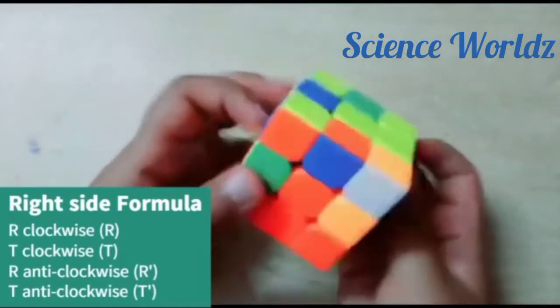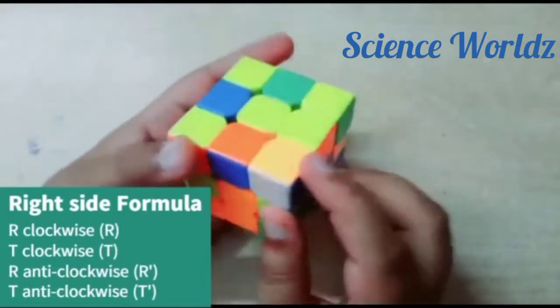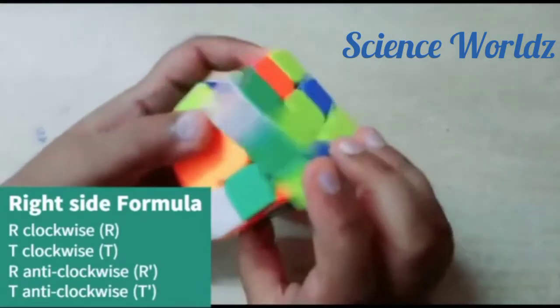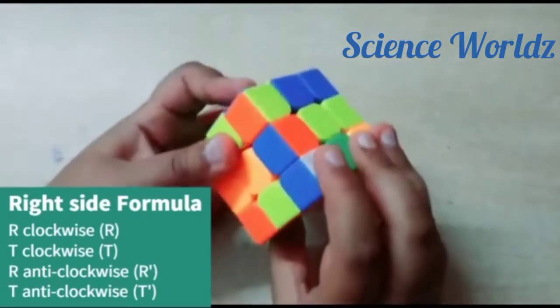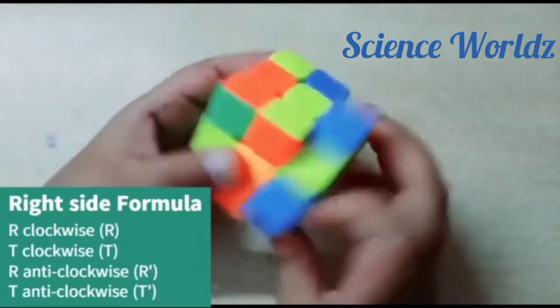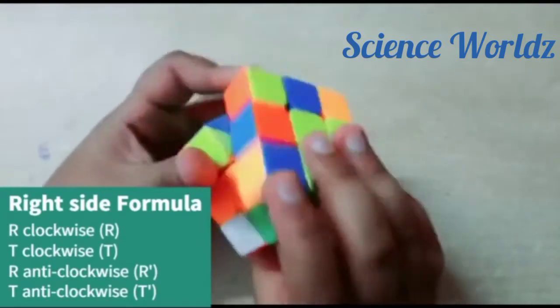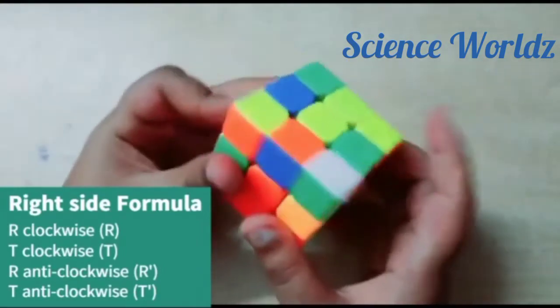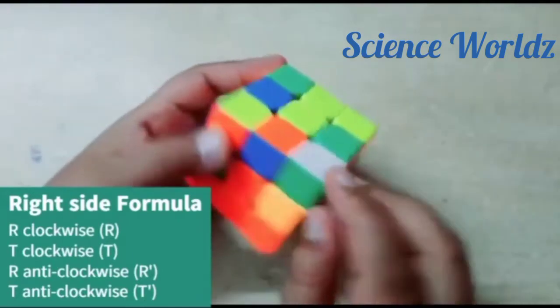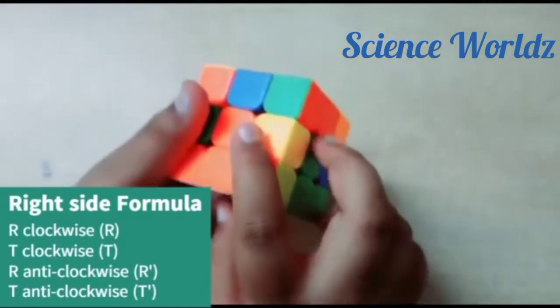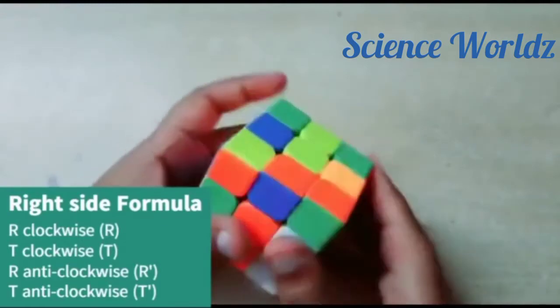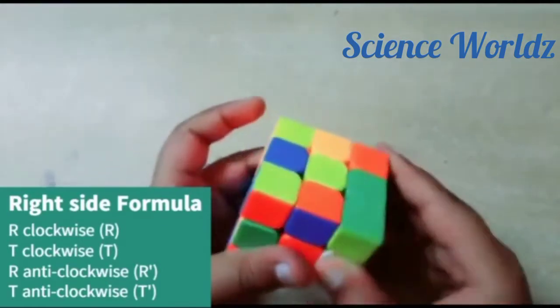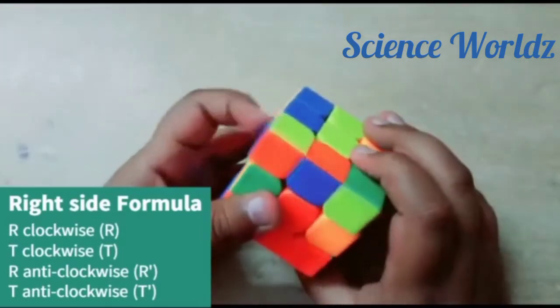Do this with another pieces also, like with this piece. Doing the right formula. And we got it. Let's do with our final piece. This three colors and here this three colors. And we got it.